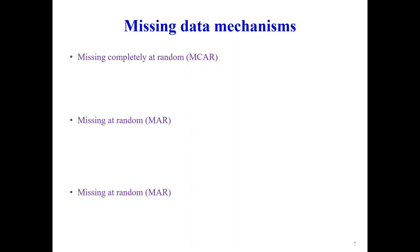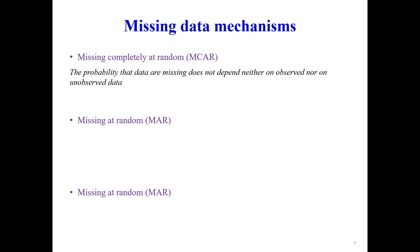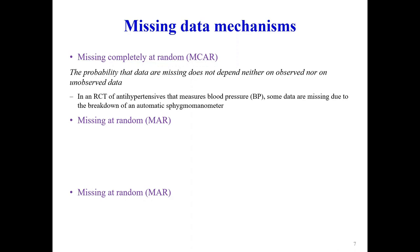To obtain valid inferences from missing data, we must consider the nature of the missing data mechanism. There is a popular taxonomy by Little and Rubin: missing completely at random (MCAR), missing at random (MAR), and missing not at random (MNAR). These categories relate the probability that data are missing to either observed or unobserved data. MCAR means missingness does not depend on any data — for example, a blood pressure machine breaking down mid-trial.